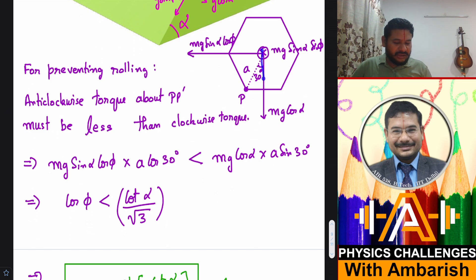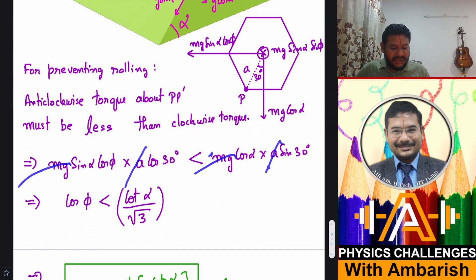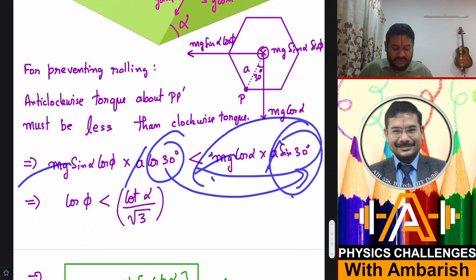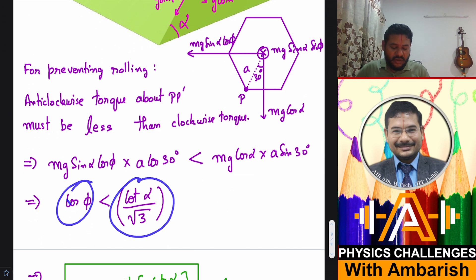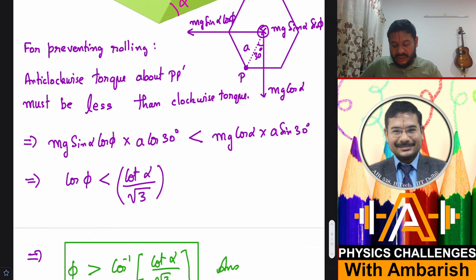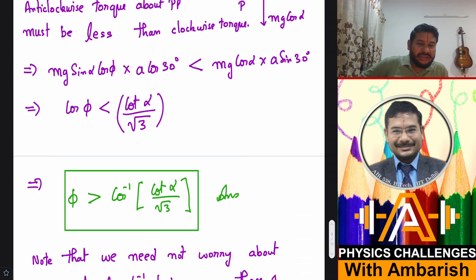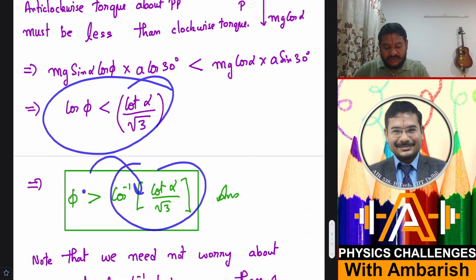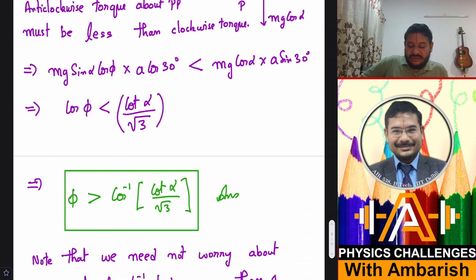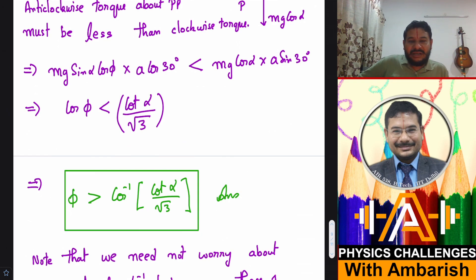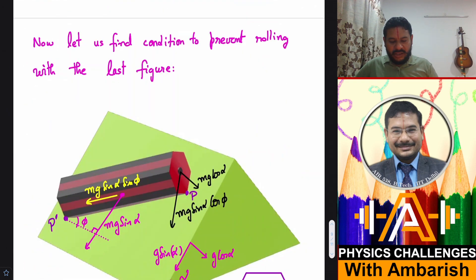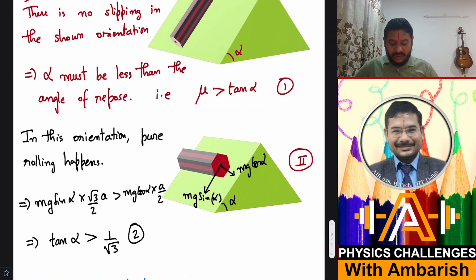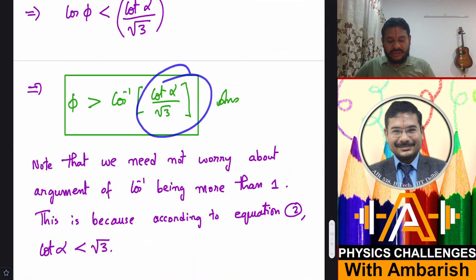Setting up the inequality: mg sin alpha cos phi × a cos 30° < mg cos alpha × a sin 30°. Cancelling mg and a from both sides gives sin alpha cos phi × cos 30° < cos alpha × sin 30°, which simplifies to cos phi < cot alpha / √3 (since sin 30°/cos 30° = tan 30° = 1/√3). Therefore phi > cos⁻¹(cot alpha / √3). Since we showed tan alpha > 1/√3, we have cot alpha < √3, so this inverse cosine is well defined.